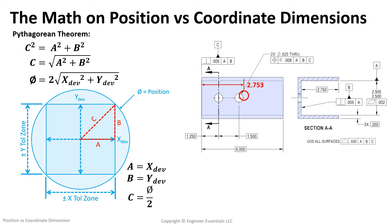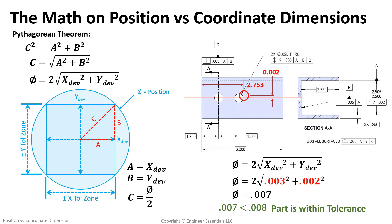Let's say for this example the hole actually measures three thou away in x and two thou away in y. If we plug that into our equation, that comes out to a total of seven thousandths of actual diametric deviation, which is less than the stated requirement of eight thousandths, so this feature passes inspection.